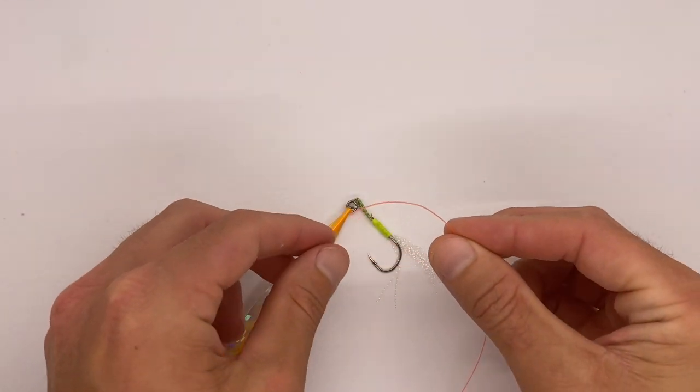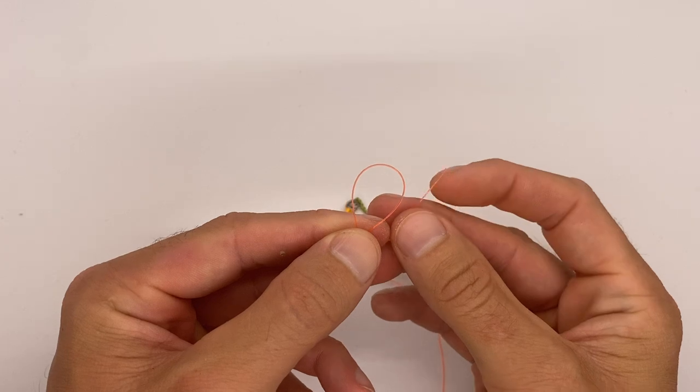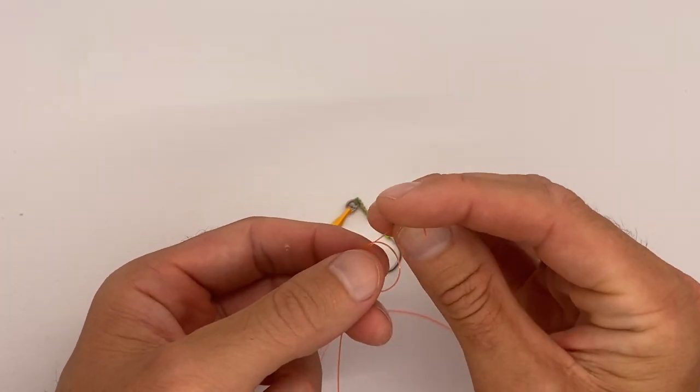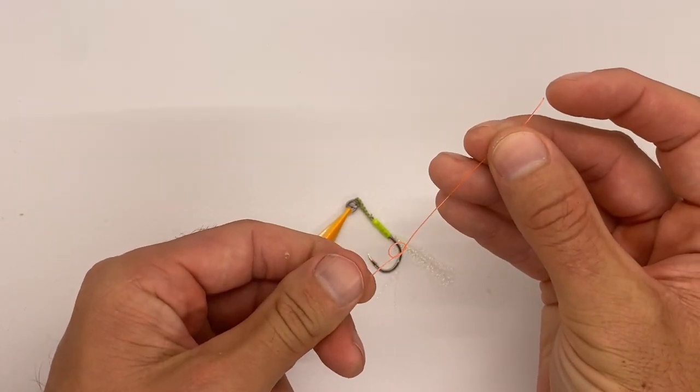We're going to set this down here. You want to tie just an overhand knot in your line. I've got this high-vis orange line, hopefully you can see. A quick overhand knot, just like that. You want to pull pretty tight, not too tight, and you want to leave a little bit of room there.